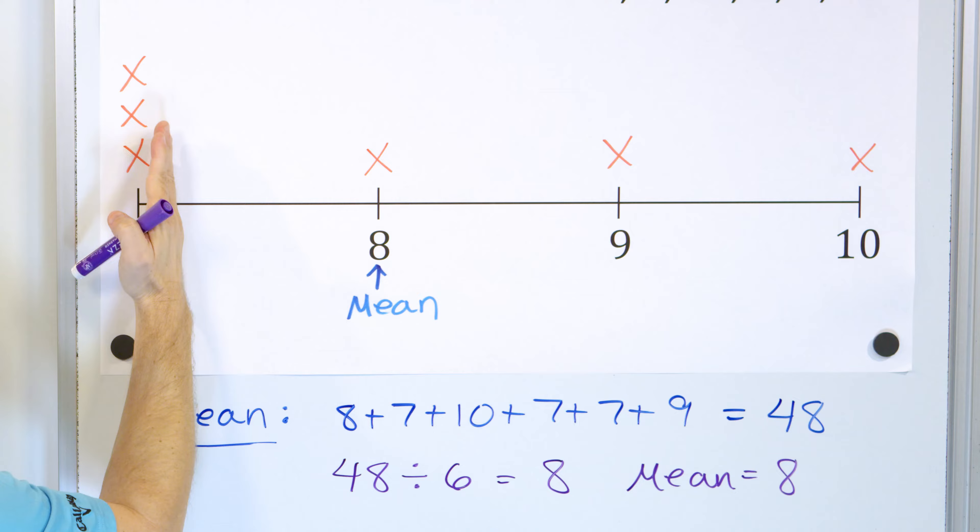Let's move on to problem number two: test scores from students in a class. We have scores of 86, 85, 91, 79, and 84. Let's first create a line plot — one student got an 86, another an 85, another a 91, another a 79, and another an 84. If I asked you graphically where the center of this data is, you wouldn't pick the far left or far right — there's too much data there. The center has to be somewhere around here, probably pulled a bit closer to the two clustered points because the mean is like a tug-of-war average.